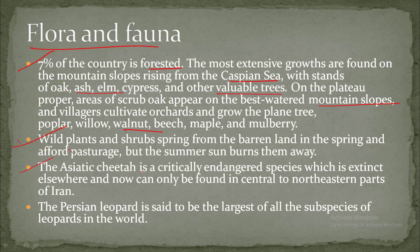The Asiatic cheetah is a critically endangered species, now extinct elsewhere in the world, and can only be found in the central to northeastern parts of Iran. There are two types of cheetahs: the Asiatic cheetah and the African cheetah. The African cheetah can be found in African regions, but the Asiatic cheetah can only be seen in Iran.